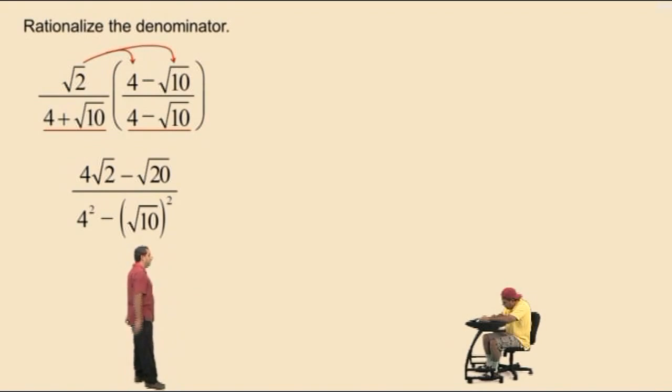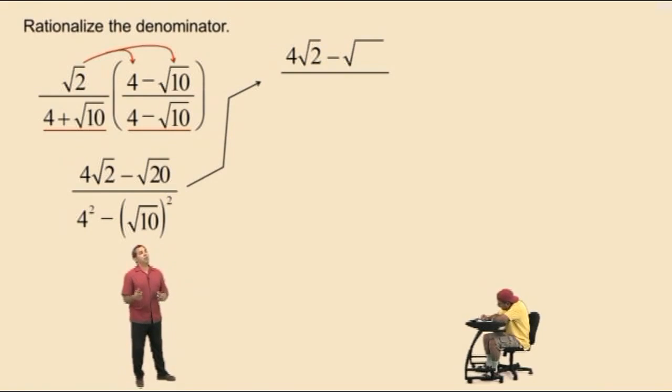Okay, let's move our work up there. Now, notice we have 4 square root of 2 subtract square root of 20. But square root of 20 can be simplified because 20 can be broken up into factors that involve a perfect square. What are those factors, Charlie? 4 and 5. That's right.